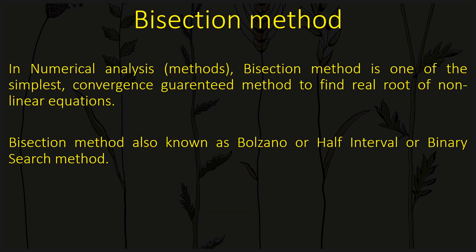Bisection method is one of the methods used in numerical analysis to find the root of a given equation, and it is the simplest convergence-guaranteed method to find the root of an equation. Bisection method is also known as the Bolzano method, half interval method, binary search method, or successive bisection method.